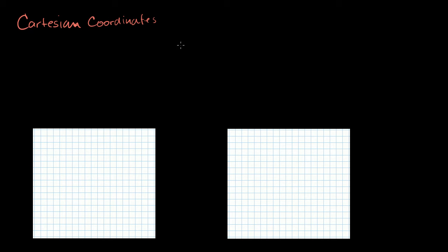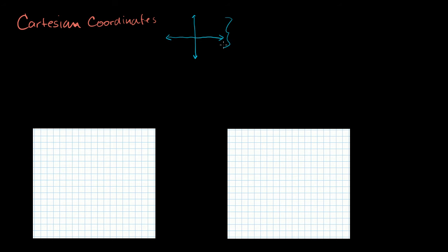When I say two dimensions, I just mean something like this screen that you're looking at. On the surface of the screen, you can either go up and down — that's one dimension — or you could go left or right, which would be another dimension. So that's why we say two dimensions. If we talked about three dimensions, you could pop out of the screen or go into the screen, but you can't do that. So this is just a two-dimensional world.